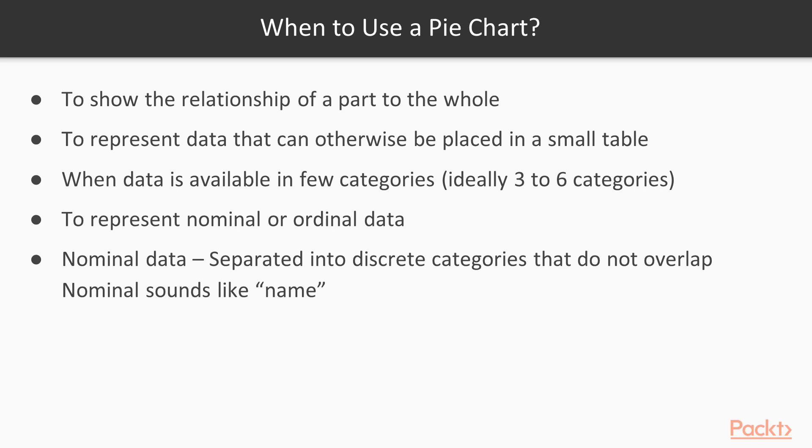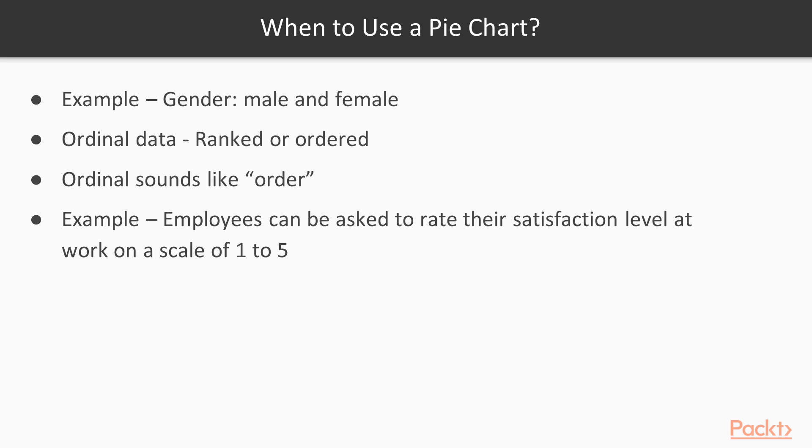This is easy to remember: nominal sounds like name. An example of nominal data is gender: male and female. Data under ordinal category is one which can be ranked or ordered. This again is easy to remember: ordinal sounds like order. Example: employees can be asked to rate their satisfaction level at work on a scale of 1 to 5.